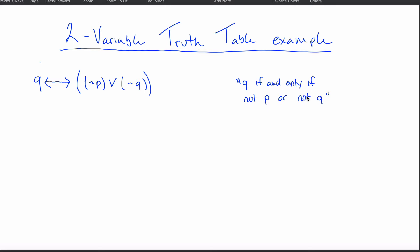The problem with the English version is that the last part lacks specificity. It can be interpreted as 'not P or not Q' — or it can be interpreted differently depending on where you pause. Those two interpretations would give you different answers, so there's at least a little bit of ambiguity there.